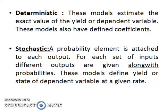Next is the deterministic model. These models estimate the exact value of the yield or dependent variable, and have defined coefficients. They make definite predictions over quantities such as crop yield, rainfall, animal live weight, etc., without any associated probability distribution or variance. The greater the uncertainty in the system, the more inadequate deterministic models become.